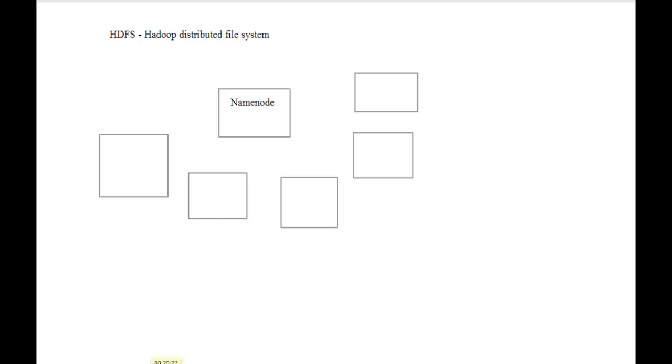Now let's get into HDFS. The architecture is something like this. Let me first draw the architecture diagram. This guy would be the master and there would be many slaves around it. Master is a colloquial term — in terms of Hadoop we call it the NameNode. And slave is also a colloquial term, but in terms of Hadoop we call it the DataNode.